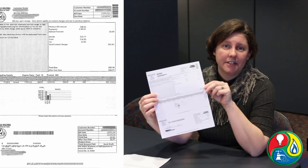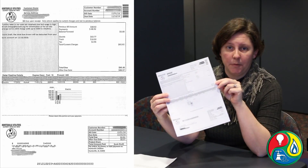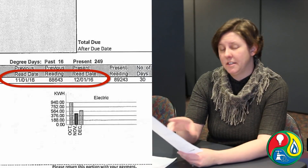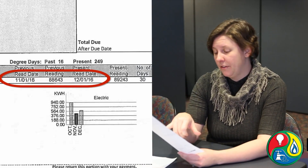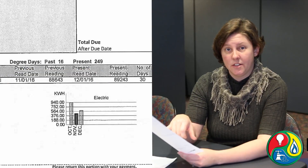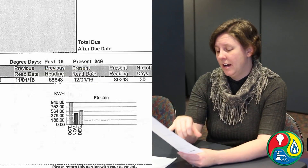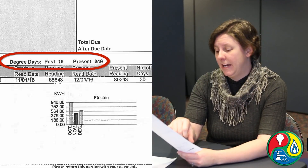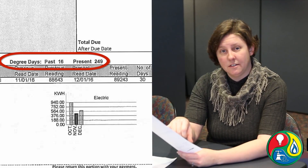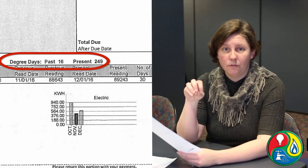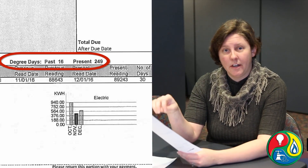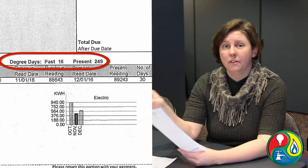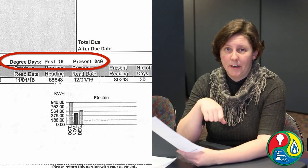Now let me give you an example showing you on our actual bill. This particular one has a read date of the first, which means that it goes for the entire month, and it has a number of days of 30. The degree day information is found right in the middle of the page and it says present of 249. That means for the entire month on this particular bill, the degree days was 249.